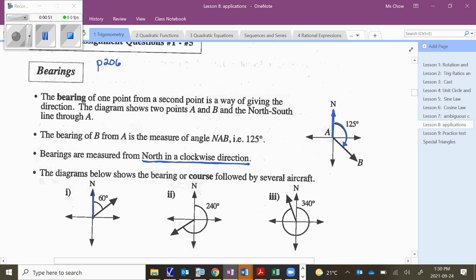So here, if somebody asked you to go on a bearing of 60 degrees, you're standing here at the origin, you're looking north, and you turn clockwise 60 degrees, and that is your bearing of 60 degrees. If I want 240 degrees from north, going clockwise 180, and then another additional 60 degrees.